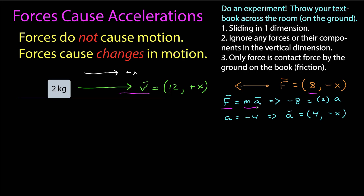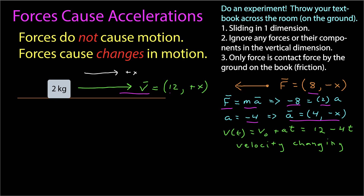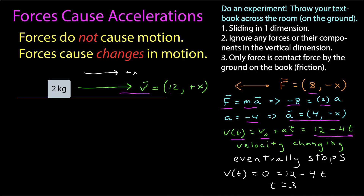In our one-dimensional notation, that's 8 pointing in the negative x direction, equal to the mass of 2 kilograms times the acceleration, which gives us an acceleration of negative 4. Since the acceleration is constant, we can derive the velocity as a function of time: initial velocity plus acceleration times time, which is 12 minus 4t. This describes the velocity changing — it starts at 12 and decreases. Setting the velocity function equal to 0, we find it comes to rest at t equals 3 seconds.